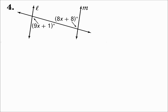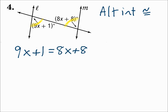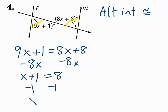Number four. Here we have alternate interior angles. The rule says that if alternate interior angles are congruent, then the lines are parallel. So the measures have to equal each other. Solve for X — get the X's on one side, subtract 8X from each side, then subtract 1 from each side. X is 7. That's true because those are alternate interior angles, and when alternate interior angles are congruent, the lines are parallel — so make their measures equal each other and solve.